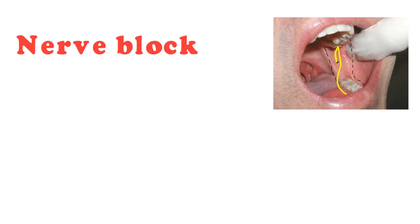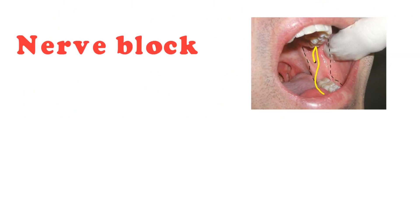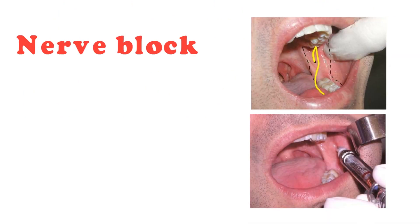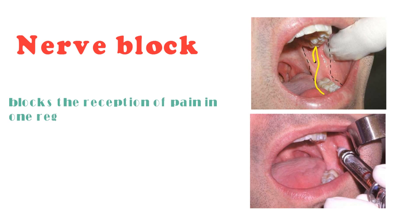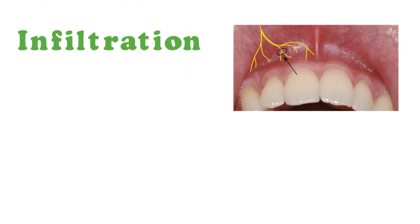Nerve block is the most common form of local dental anesthesia. It blocks the reception of pain in one region of the mouth at a time. Infiltration is the delivery of anesthetic inferior to the root of the tooth involved in the dental work.